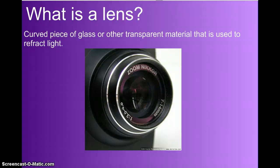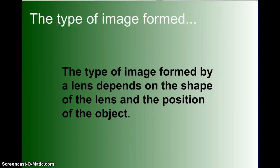What is a lens? A lens is a curved piece of glass, or other transparent material, that is used to refract, or bend, light. We see lenses commonly in cameras. The type of image formed by a lens depends on the shape, and the lens, and the position of the object. So, there are lots of things that will determine what something looks like when it is being shown through a lens.